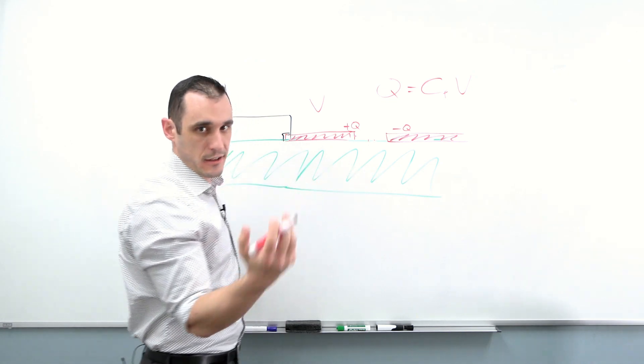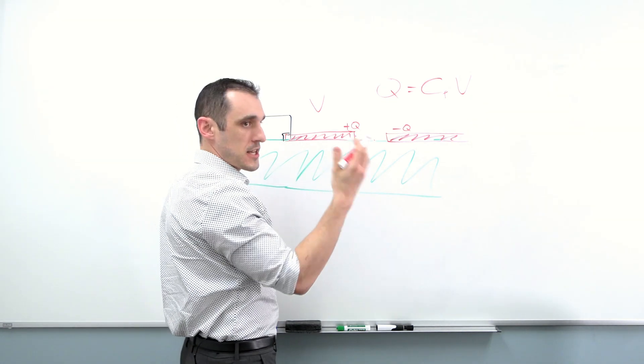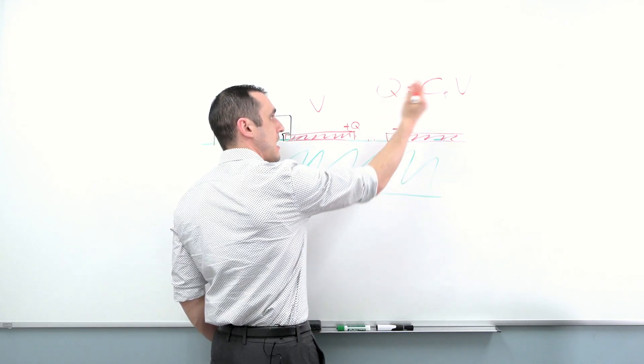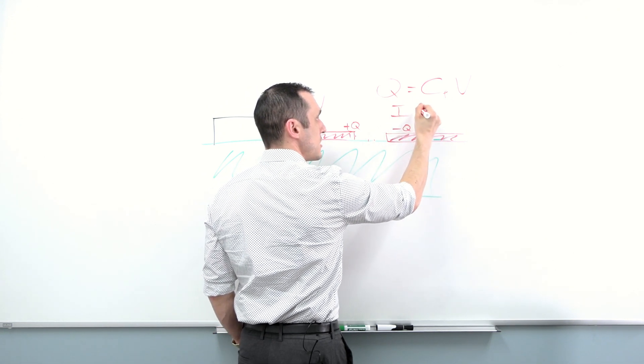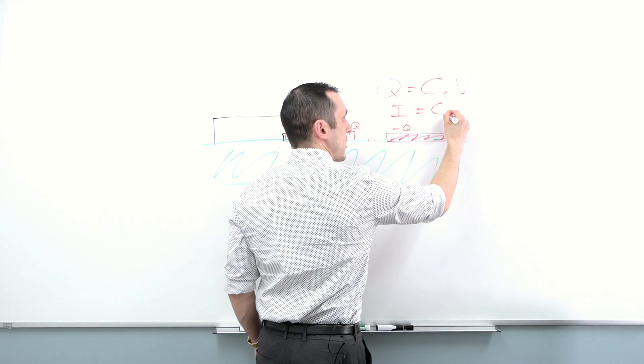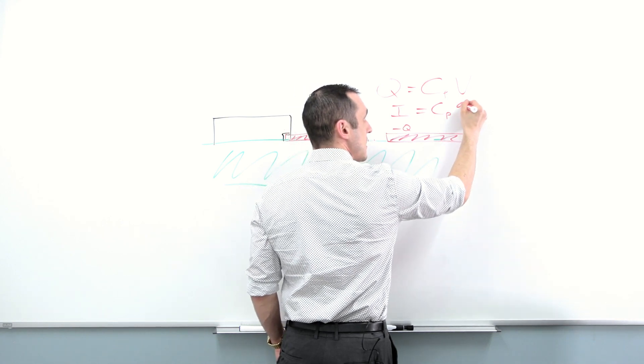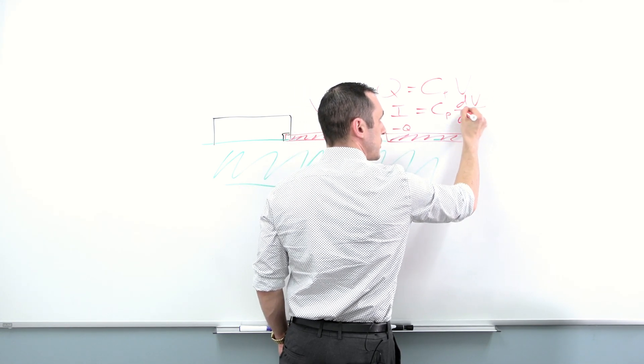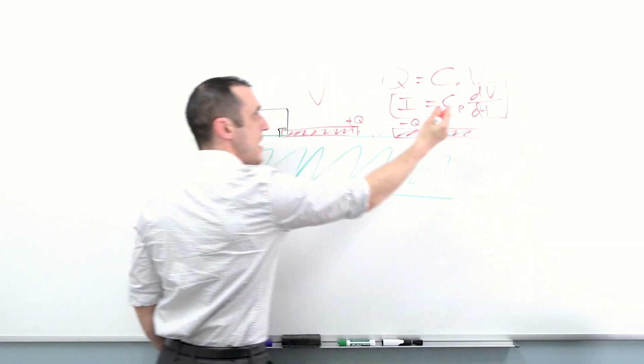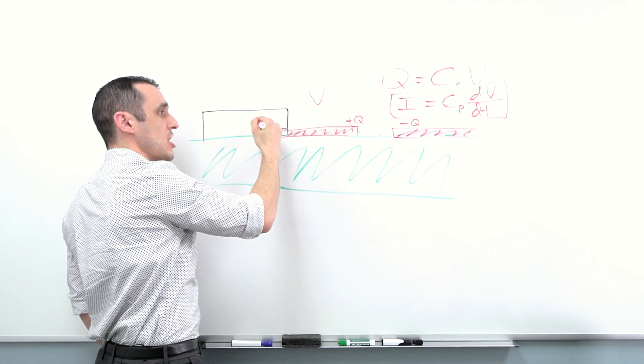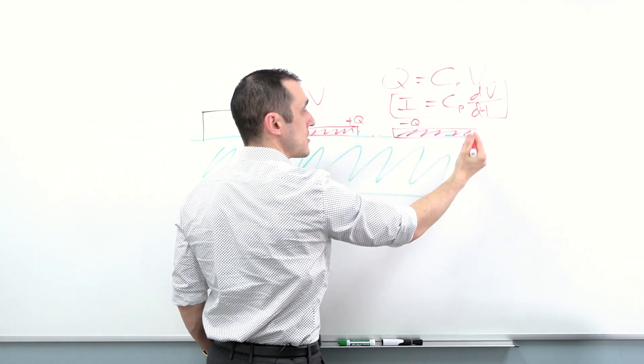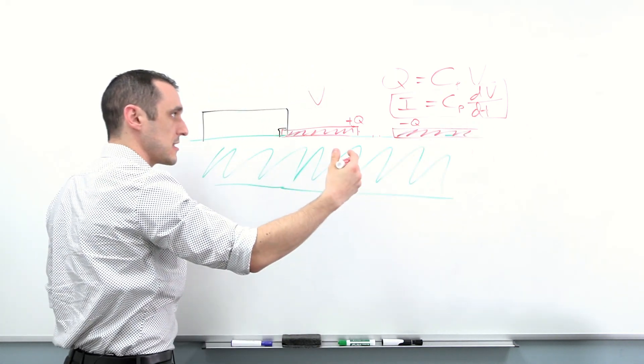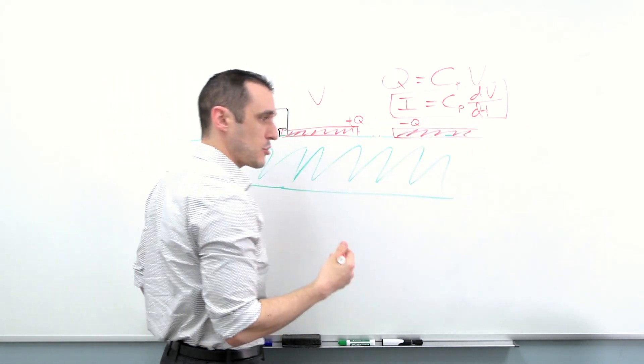Well, if you go back to your calculus class, or if you just use the delta notation and take the time derivative of this, we know that the current is equal to the parasitic capacitance times the change in voltage over time. This is the mechanism by which this chip can induce some current on some other conductor in this system. And it's due to the capacitance between them.